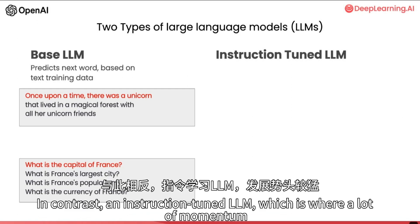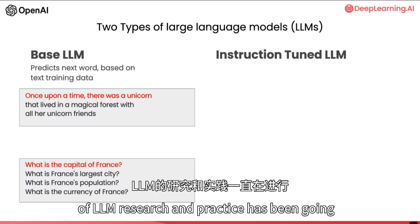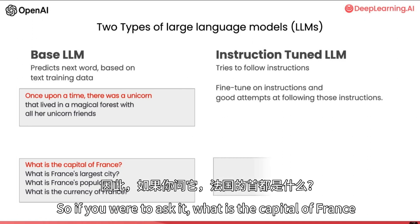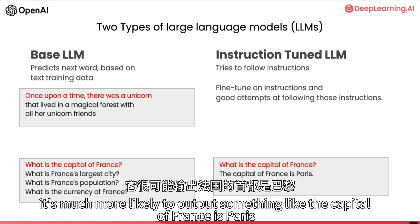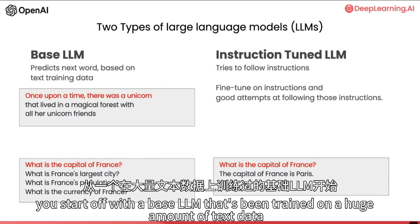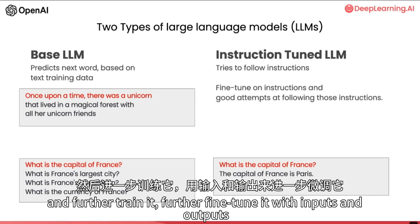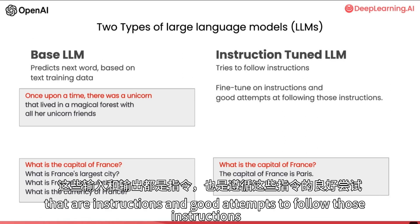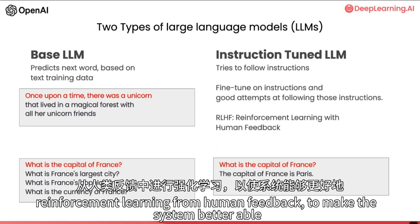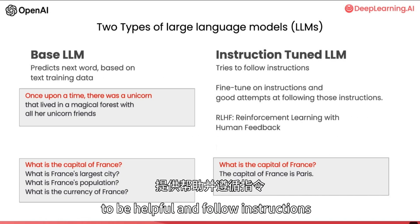In contrast, an instruction-tuned LLM — which is where a lot of the momentum of LLM research and practice has been going — has been trained to follow instructions. So if you were to ask it 'what is the capital of France,' it's much more likely to output something like 'the capital of France is Paris.' Instruction-tuned LLMs are typically trained by starting with a base LLM trained on a huge amount of text data, then further fine-tuning it with inputs and outputs that are instructions and good attempts to follow those instructions, and then further refining using a technique called RLHF — reinforcement learning from human feedback — to make the system better able to be helpful and follow instructions.